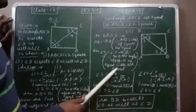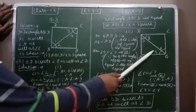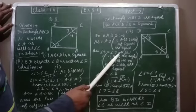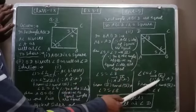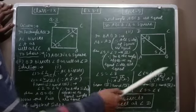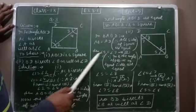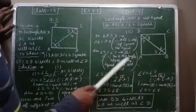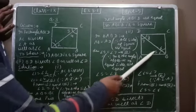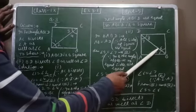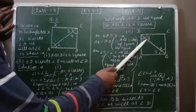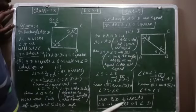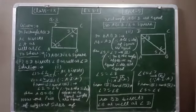Angle 5 equals angle 8 by alternate interior angles — that is equation 4. Angle 6 equals angle 7 by alternate interior angles — that is equation 5. From equations 3 and 5, angle 5 cancels, giving angle 7 equals angle 8. From equations 3 and 5, angle 7 cancels, giving angle 5 equals angle 6. Since angles 5 and 6 are equal, BD bisects angle B, and since angles 7 and 8 are equal, BD bisects angle D.